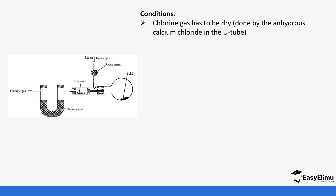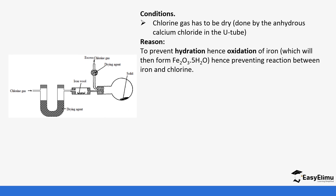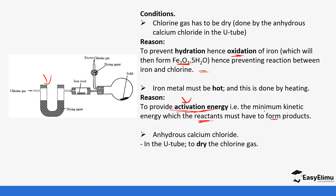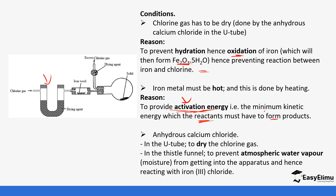Chlorine gas has to be dried before the reaction occurs. This helps prevent hydration and oxidation of the iron, which could form iron(III) oxide and prevent the reaction from occurring. The iron metal must be heated to introduce activation energy — the energy required so that the reactants can form products. The anhydrous calcium chloride in the U-tube is used to dry the chlorine gas, and the drying agent in the guard tube prevents atmospheric moisture from entering the apparatus.